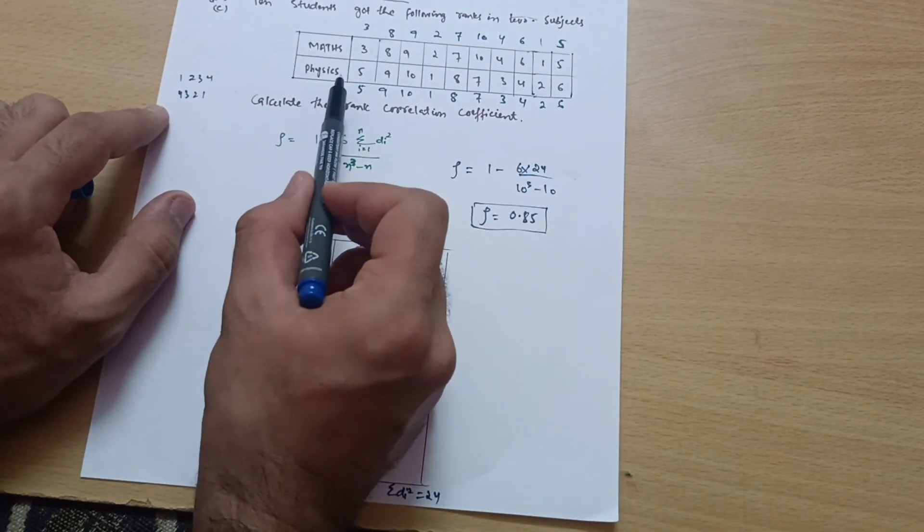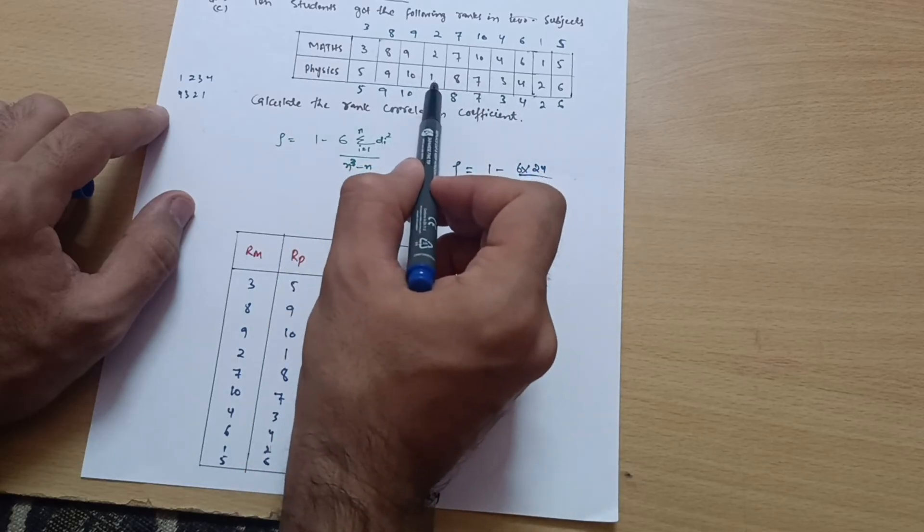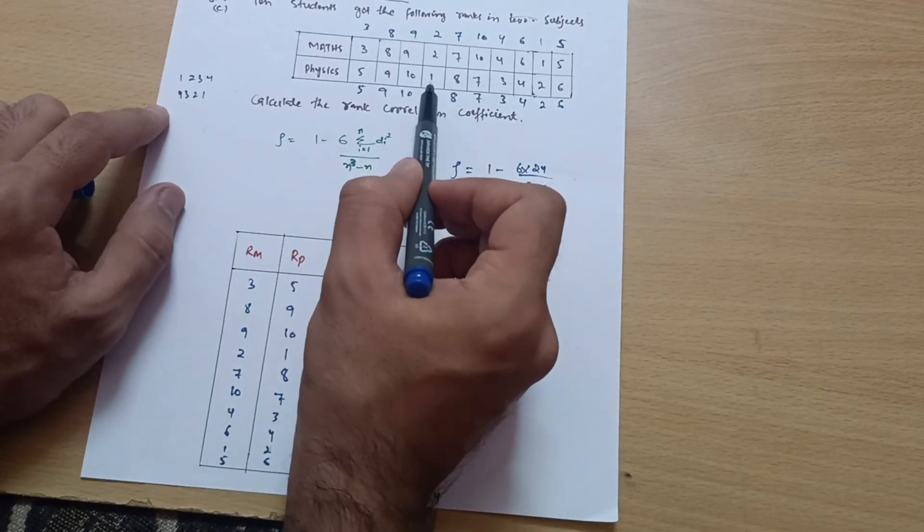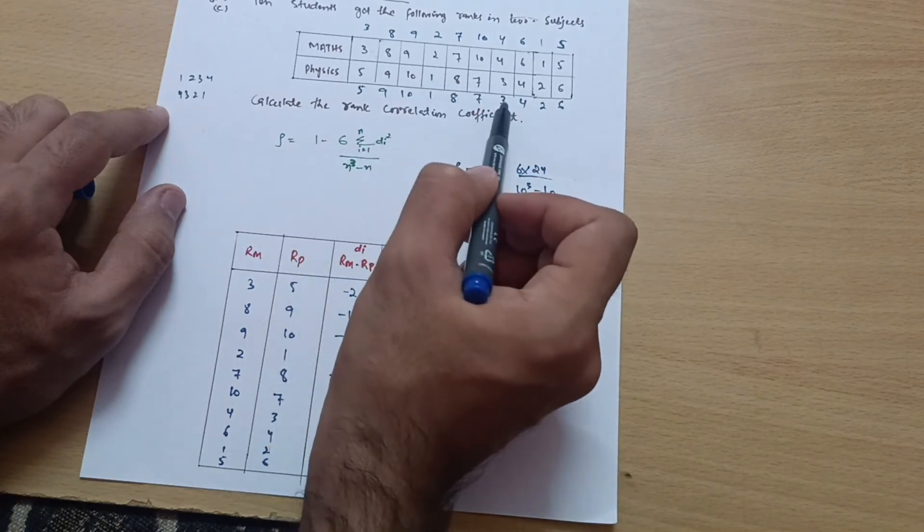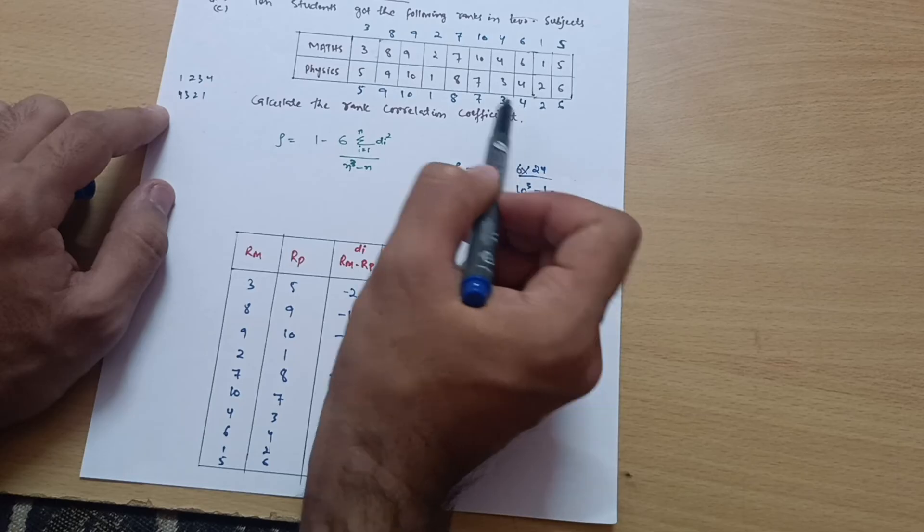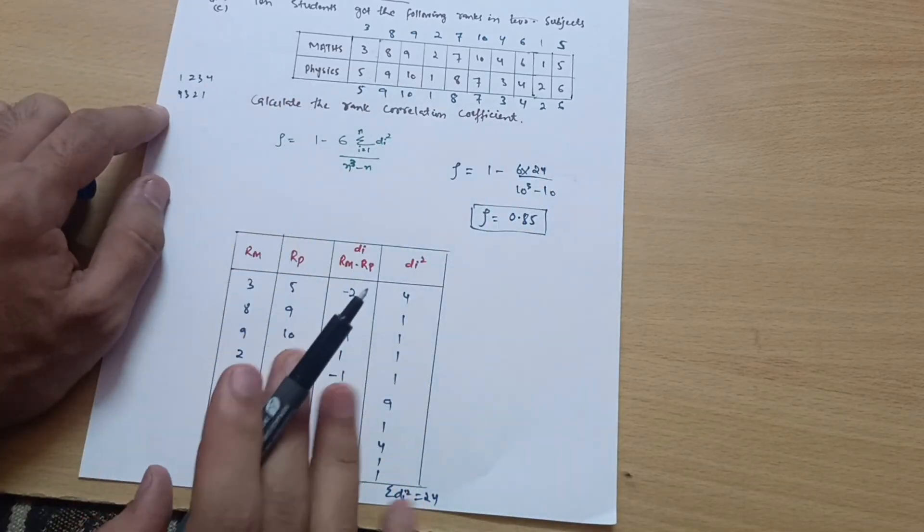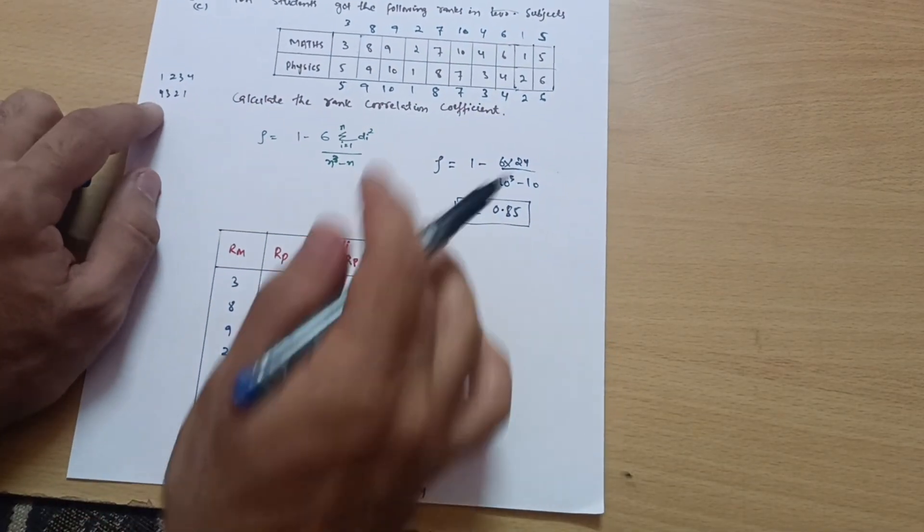Then ranks of physics. Check the minimum number. 1 is the minimum, so 1 rank for 1. For 2 you should assign rank 2, for 3 assign rank 3, for 4 is 4, for 5 like that you have to assign the ranks.